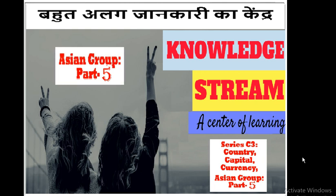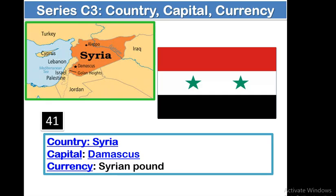Let me start with the 41st country, Syria. Capital: Damascus. Currency: Syrian Pound. Let me see the geographical location of Syria. Its neighboring countries include Turkey in the north, and Iraq.